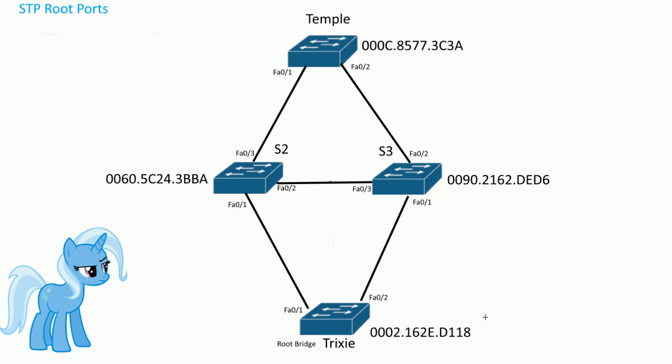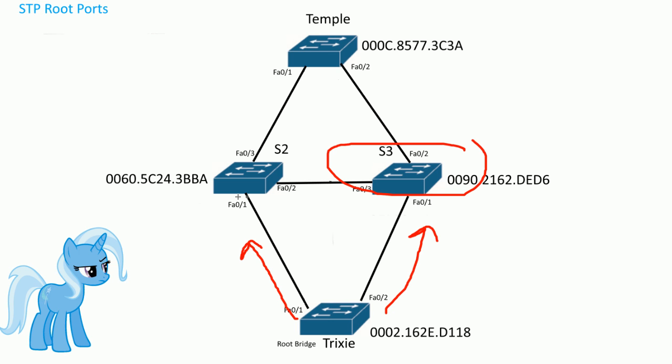Every switch in a network will send out BPDU hello frames containing information like the bridge ID and the cost to the root bridge. The root bridge sends out a BPDU hello frame with a cost of zero, since it costs nothing to reach itself. S3 and S2 receive these frames. With spanning tree protocol on ethernet networks, gigabit has a cost of 4 and fast ethernet has a cost of 19.